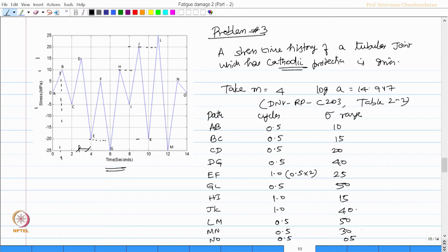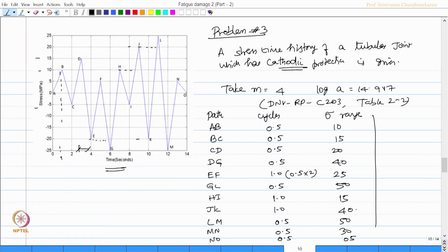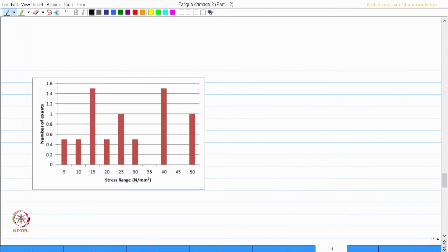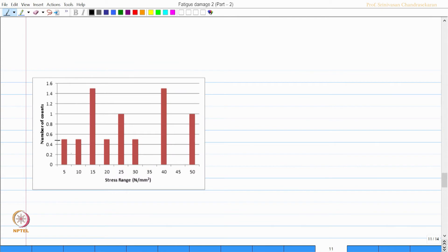I can directly get the stress range. Once I get the stress range, I can plot the stress bin as seen in the figure. For example, if you look at the stress range of 5, it is 0.5, and 10 is again 0.5. One can plot the stress bin directly.